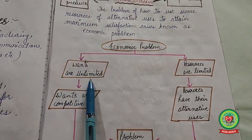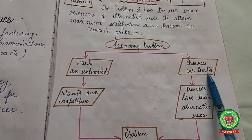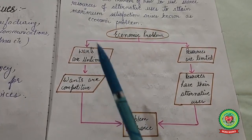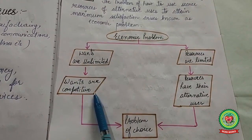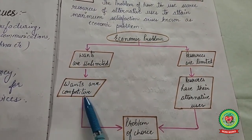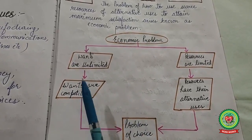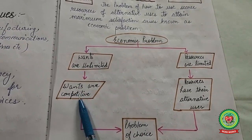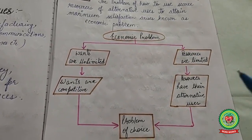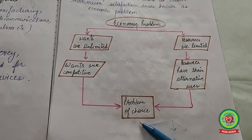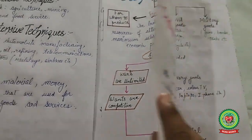In table form, wants are unlimited but resources are limited, and their uses are competitive — land can be used for wheat, cotton, or vegetable production, each giving a return in money. Resources have alternative uses, so the problem of choice arises. This is known as the economic problem.